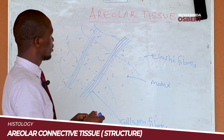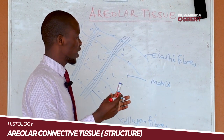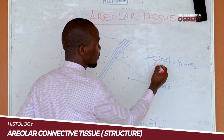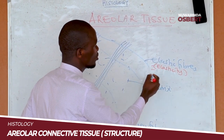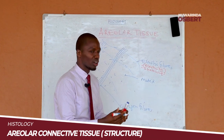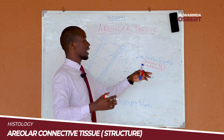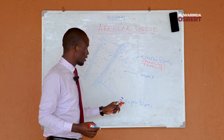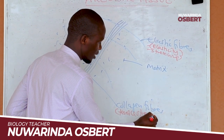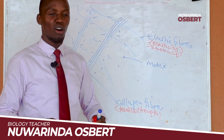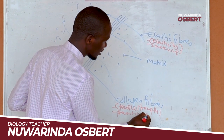These fibers do different functions. The elastic fibers, from the word elastic, provide the tissue with elasticity — they allow the tissue to stretch, to expand and contract. The collagen fibers, on the other hand, provide the tissue with tensile strength. They prevent overstretching of the tissue, so that the tissue does not overstretch and get damaged.